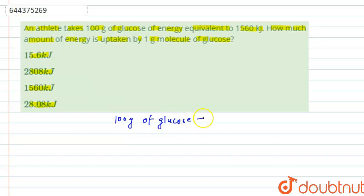So one gram, one gram of glucose equals 15.6 kilojoules energy. But an athlete takes one gram molecule.